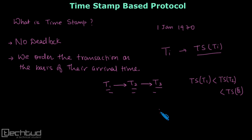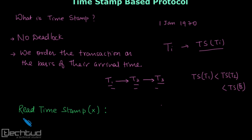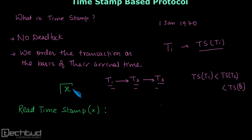To ensure this, we have two types of timestamps associated with each data item. The first is the read timestamp of data item X, and the other is the write timestamp. For each data item X, we maintain these two timestamps.